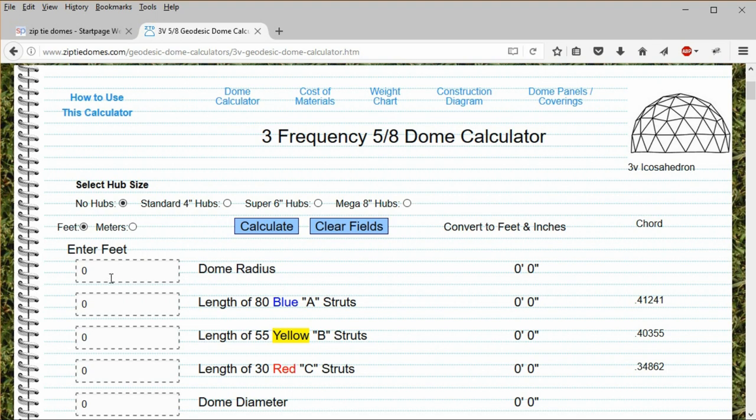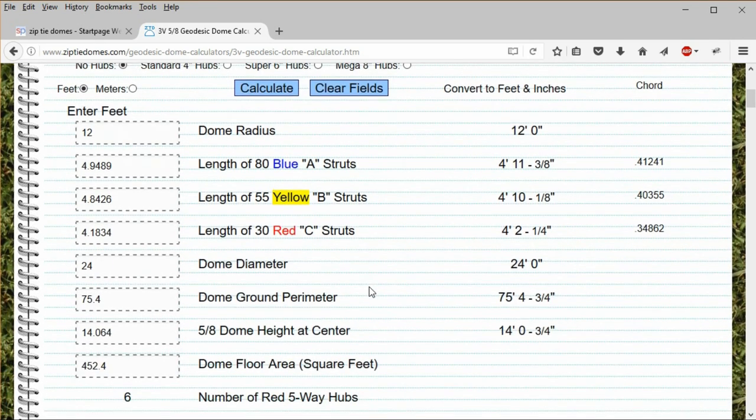The calculator is simple to use. Just put the number of feet in any of the input fields and click calculate to determine the length of the other fields.